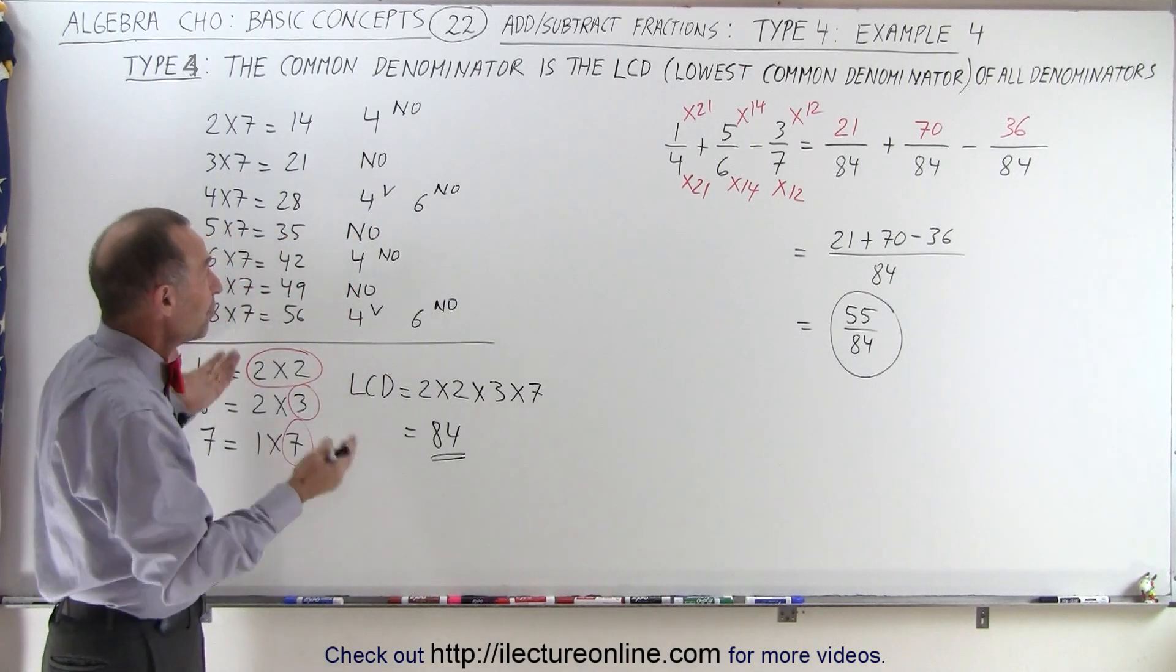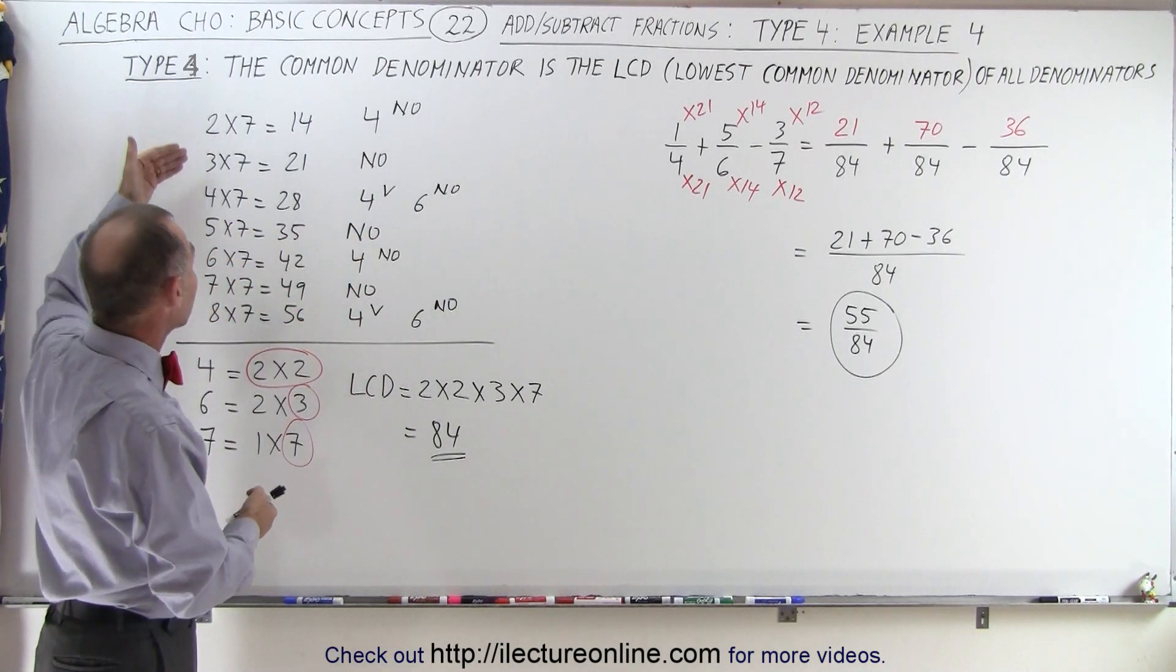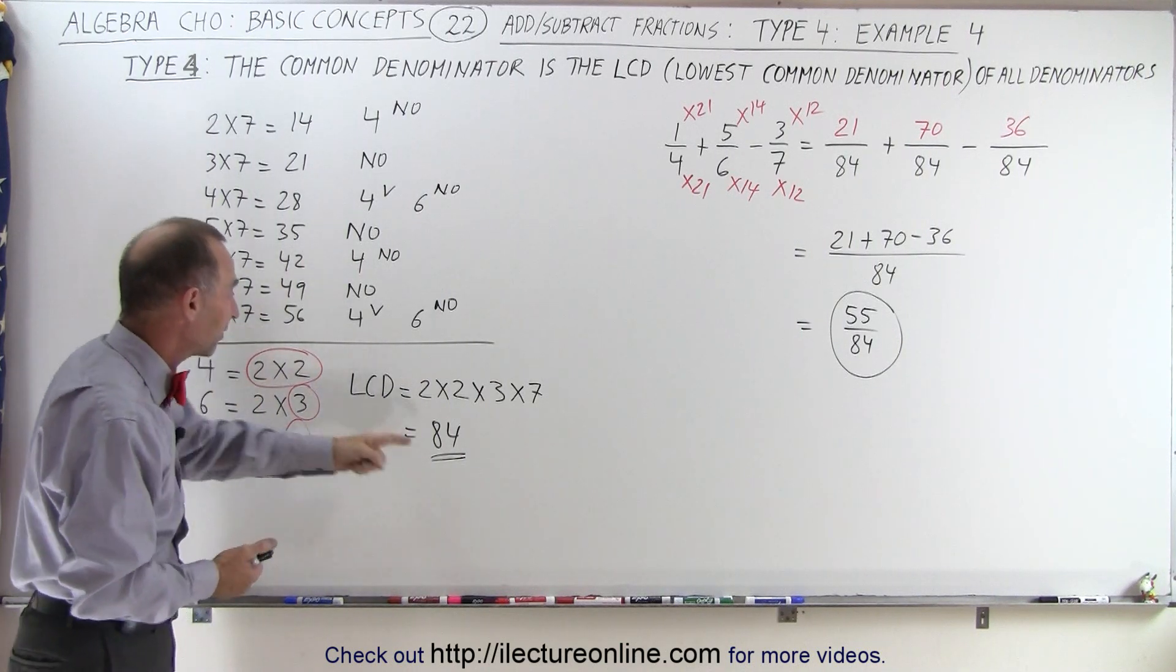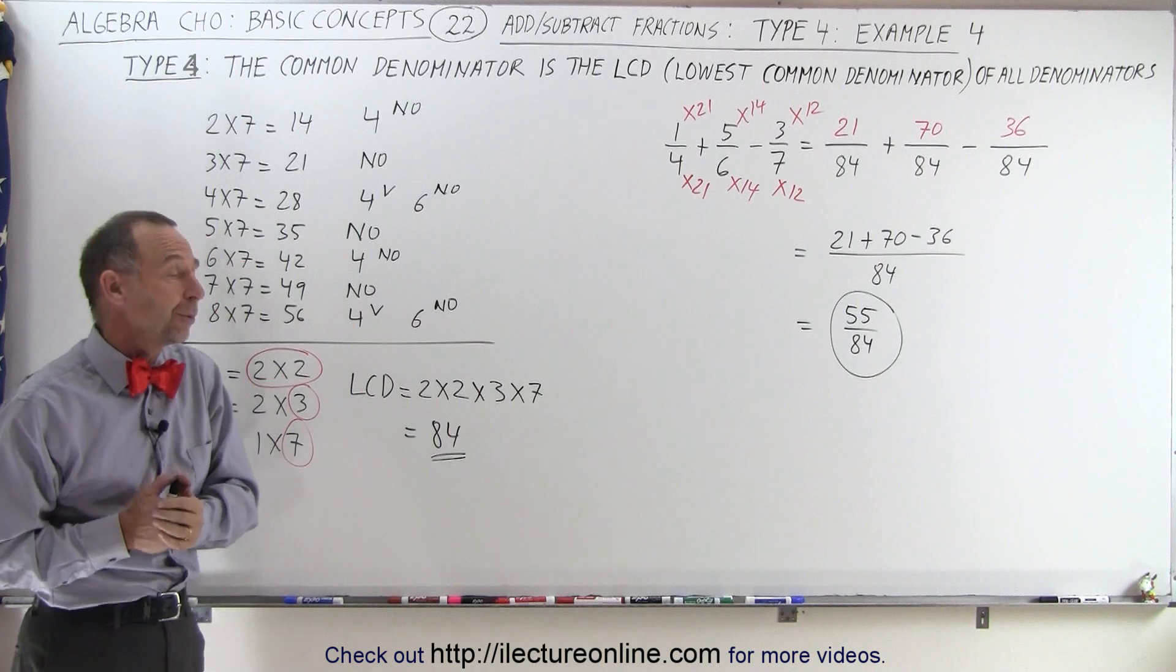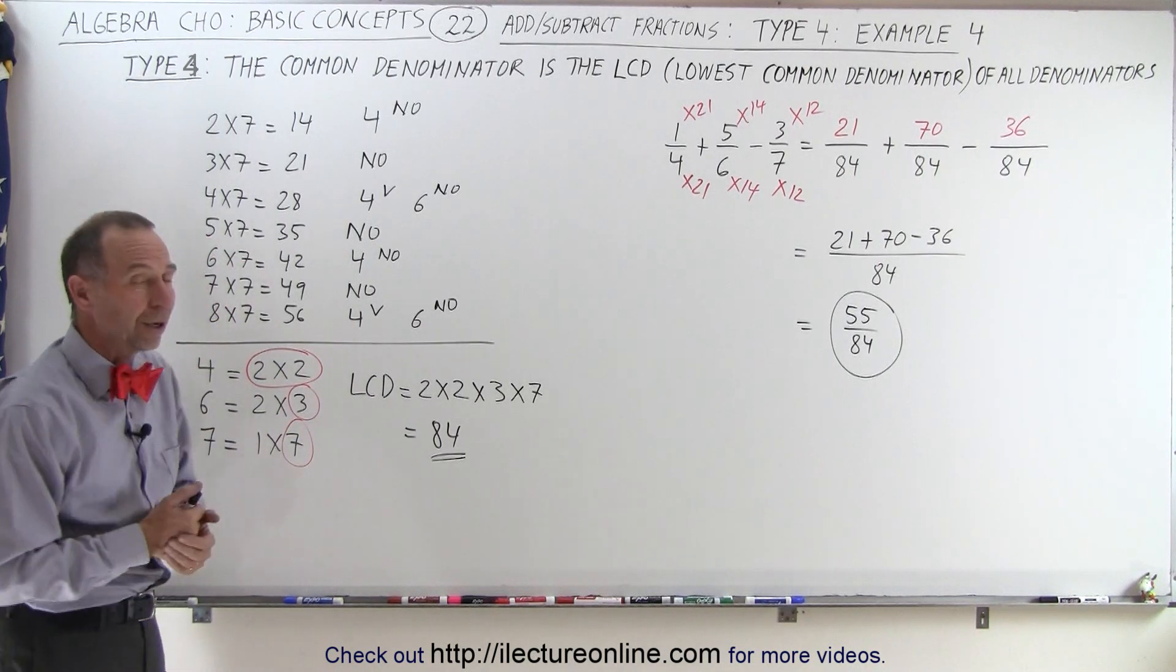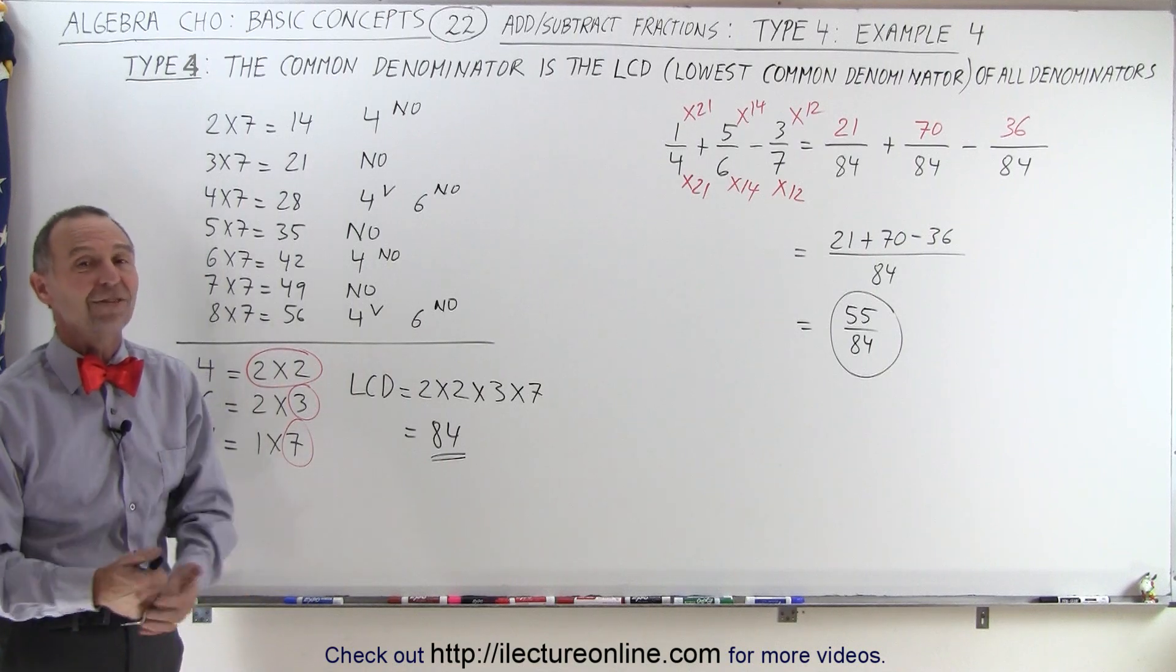So again, we have two methods, but it became clear that this would be very laborious, and it would take us a while before we finally would find the lowest common denominator, which is 84. And so therefore, using this method appeared to be a whole lot faster. And that's how it's done.